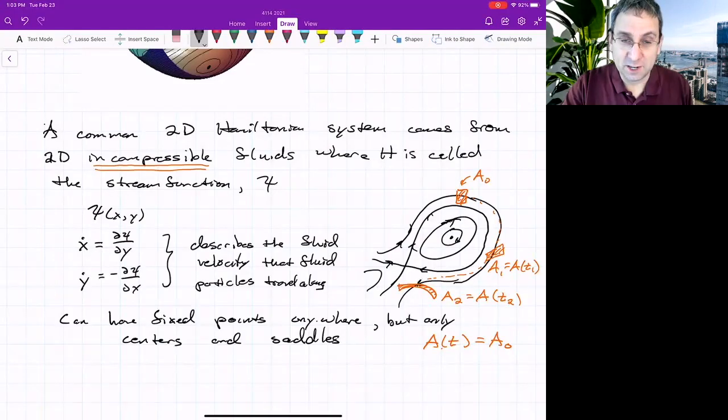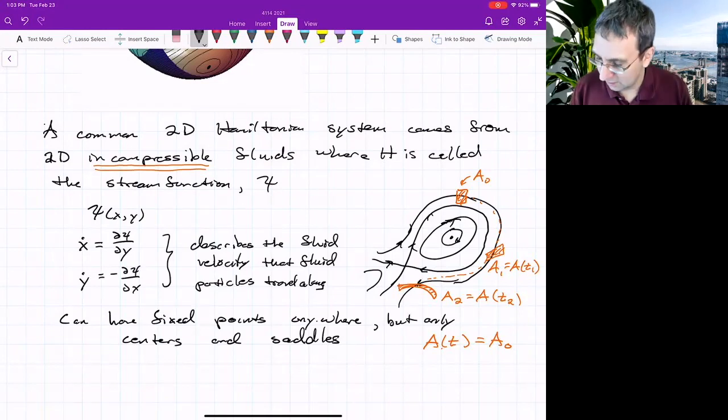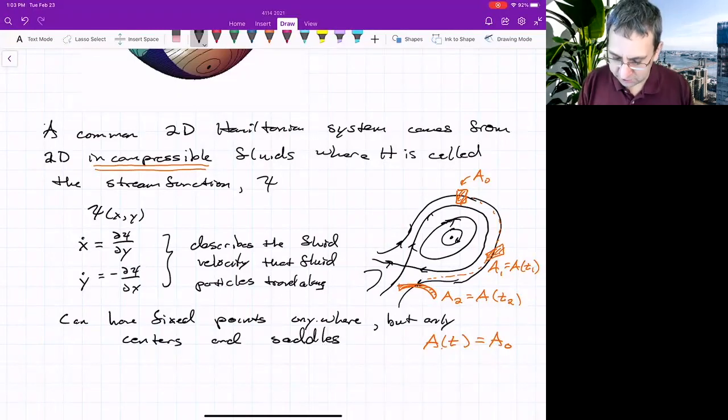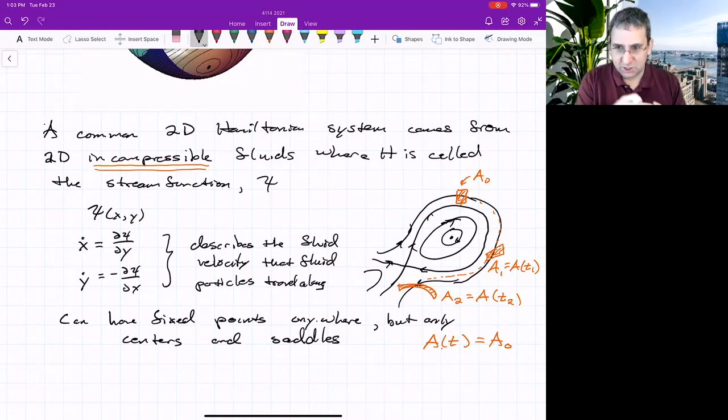But now Hamiltonian systems are actually defined in higher dimensions than just two. But that would take another course. So I'm just talking about two dimensional Hamiltonian systems. Plus, you'll notice like we have throughout this course, we're ignoring any dependence on time. For the actual stream function for the weather, that thing changes with time.